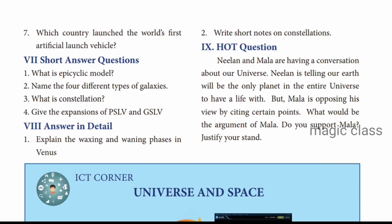So that covers the short answers. The final detailed answers are about waxing and waning in Venus, and constellations. How the moon has waxing and waning phases - the same phases apply to Venus. For detailed diagrammatic explanation, you can check your textbook. Those topics and constellation topics are covered in Part 1 and Part 2 videos of this lesson. If you have any doubts, you can always post your queries. With this, the lesson is completely over. Thank you students.